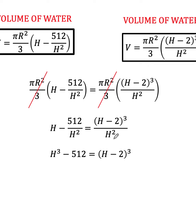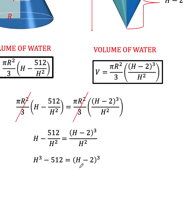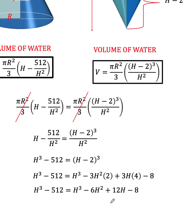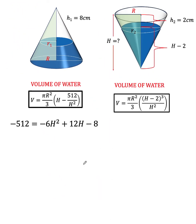Multiplying each term by H squared: H times H squared becomes H cubed, and H squared divided by H squared leaves 512. On the right side, what remains is the numerator (H minus 2) cubed. Expanding using the cube of a binomial: H³ minus 3H² times 2 plus 3H times 4 minus 8, which simplifies to H³ minus 6H² plus 12H minus 8. Since H cubed appears on both sides, we subtract H cubed from both sides, leaving a quadratic equation.